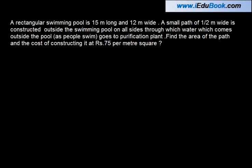A rectangular swimming pool is 15 meters long and 12 meters wide. A small path of half meter wide is constructed outside the swimming pool on all sides through which water that comes outside the pool as people swim goes to the purification plant. Find the area of the path and cost of constructing it at Rs. 75 per meter square.